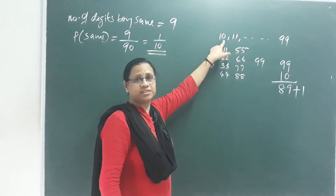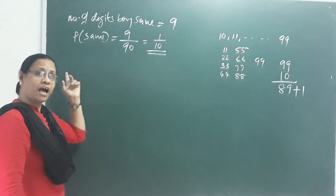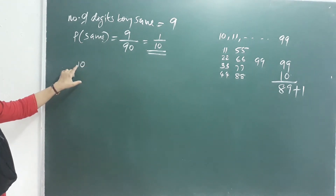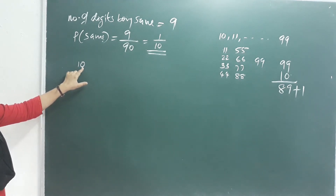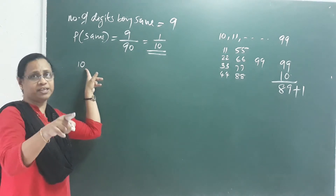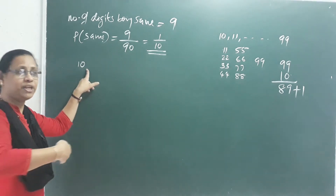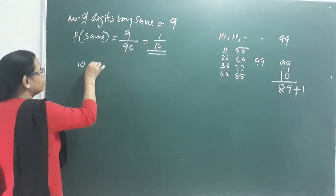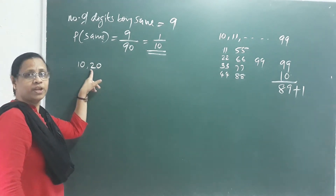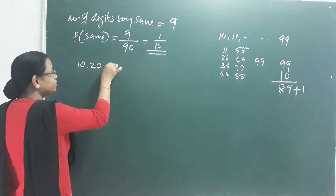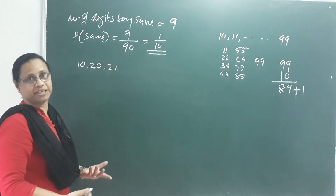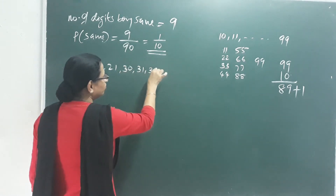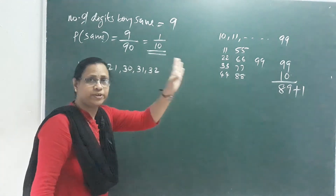What is the probability of the first digit being larger than the second? The numbers where the first digit is larger include: 20, 21; 30, 31, 32; 40, 41, 42, 43; 50, 51, 52, 53, 54; 60, 61, 62, 63, 64, 65; 70, 71, 72, 73, 74, 75, 76; 80, 81, 82, 83, 84, 85, 86, 87. We exclude same-digit numbers like 11, 22, 33 since first digit is not larger there.